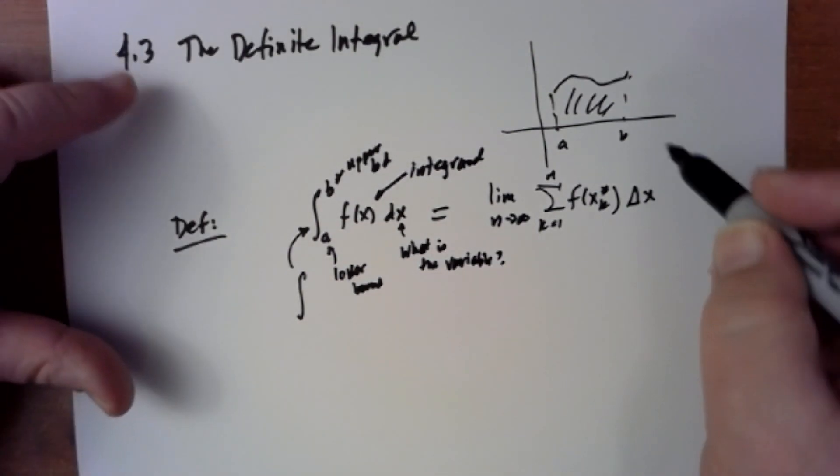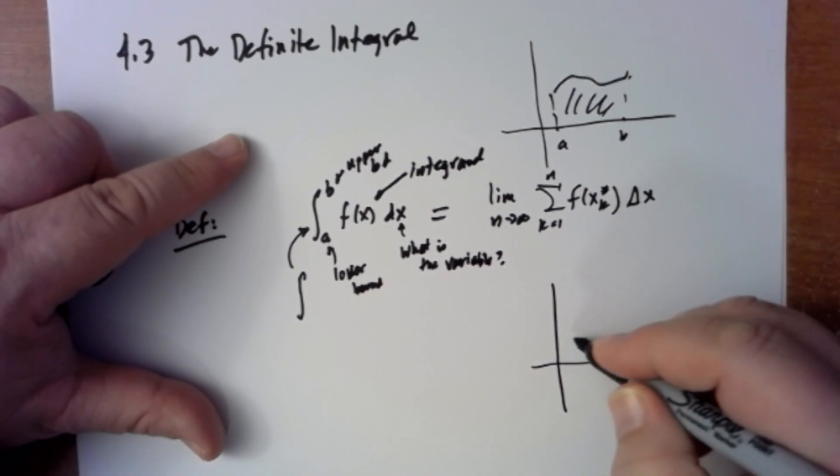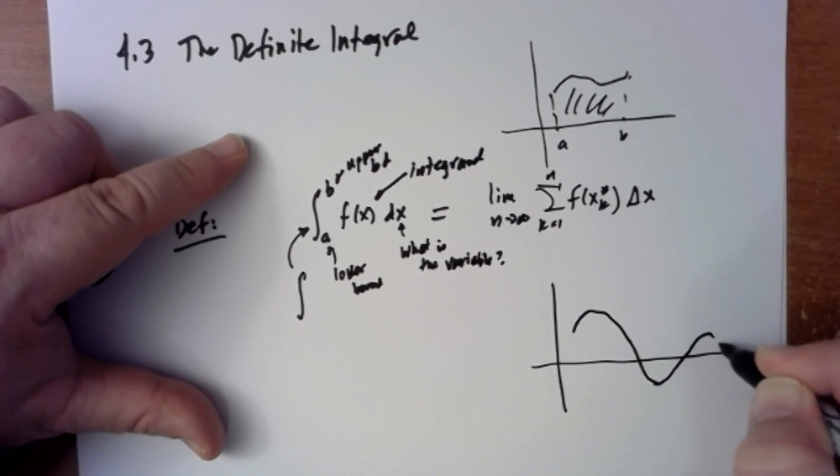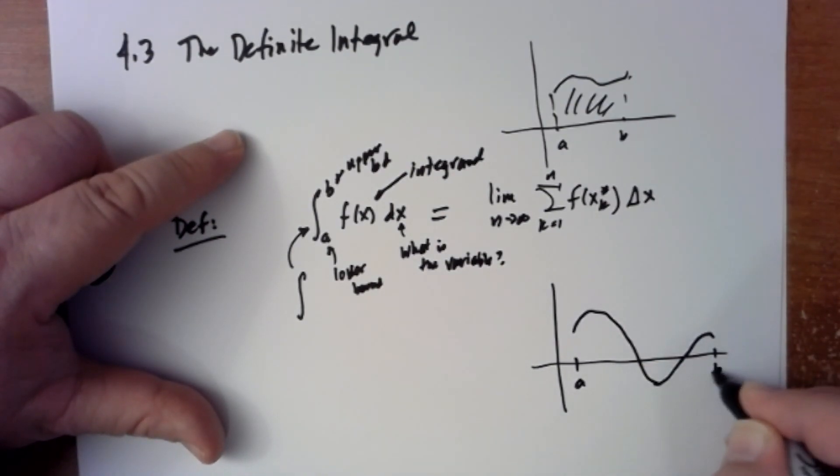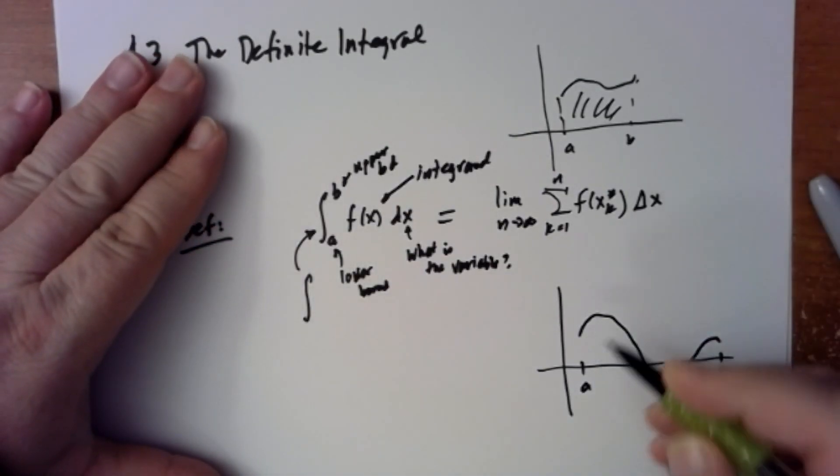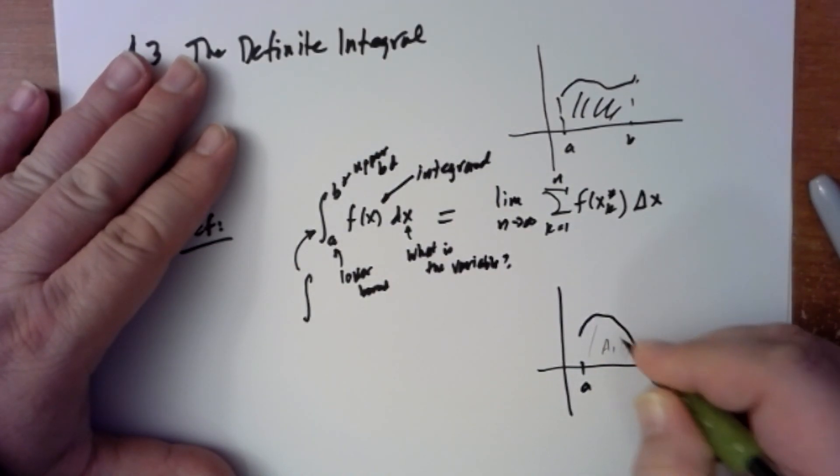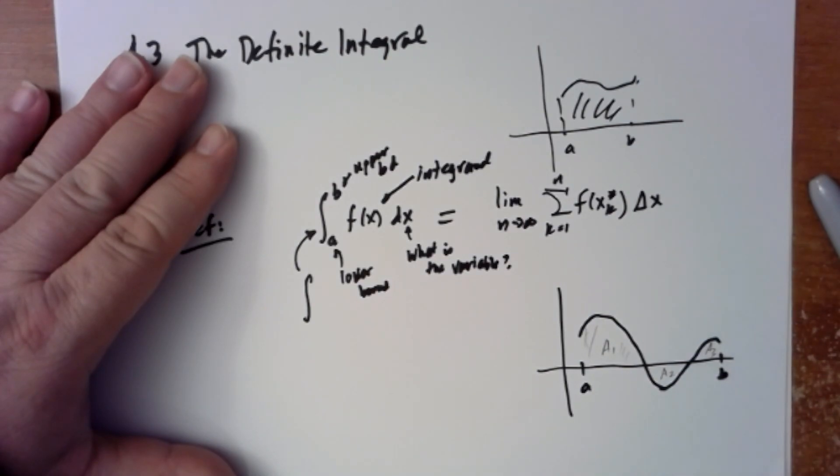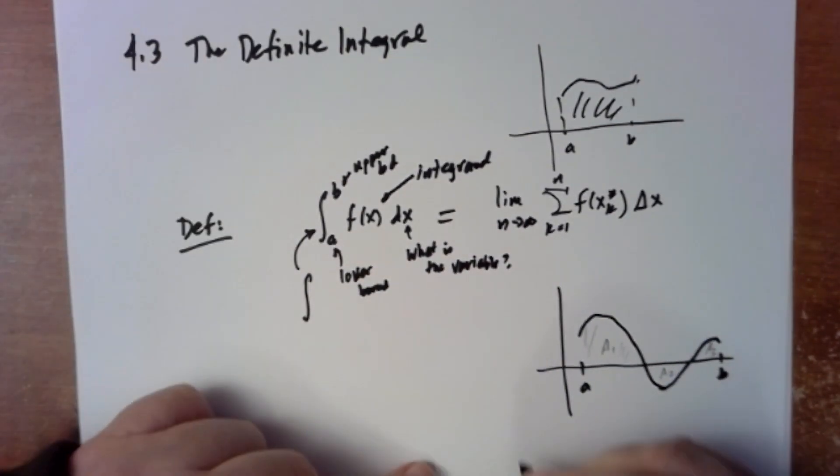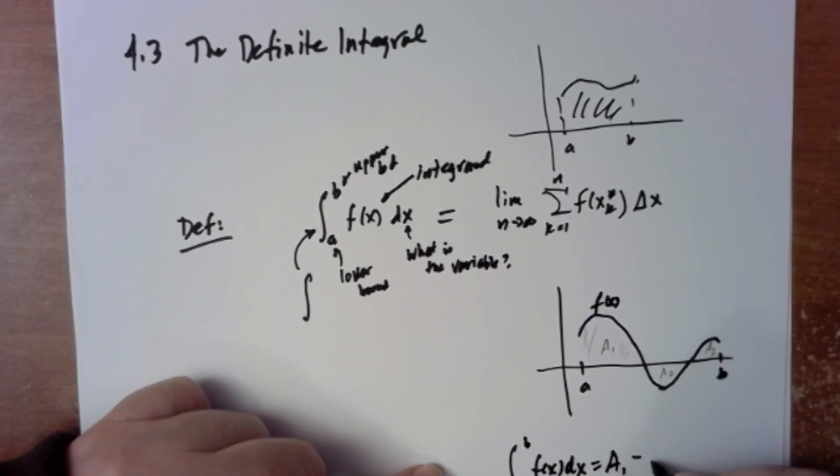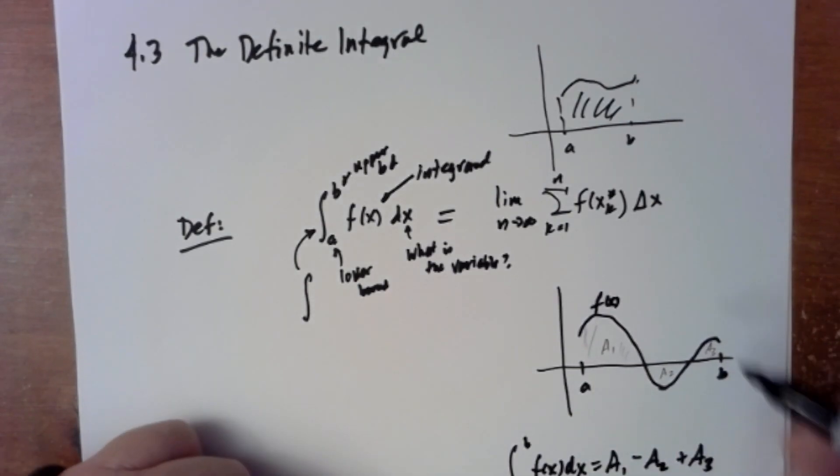How does the integral work if you have positive and negative values of your function? If you have a function that looks like this, and this is area a1 as a positive number, and this is area a2 as a positive number, and this is area a3 as a positive number, then the integral from a to b of f(x) dx will be area a1 minus area a2 plus area a3. That was just like we were doing with our Riemann sums before.